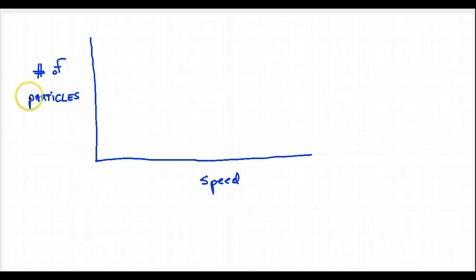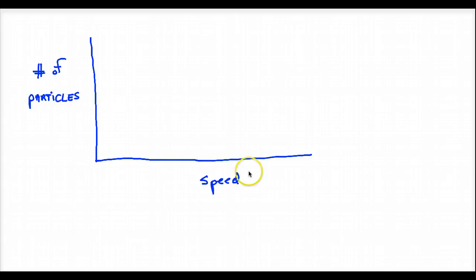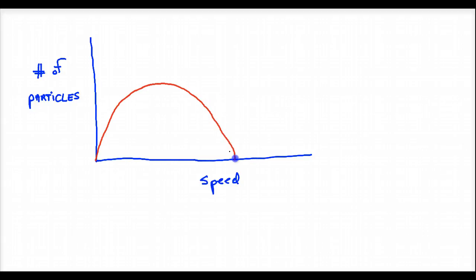On the left-hand side, the dependent variable is the number of particles, and speed is the independent variable. What we're going to have is, at a certain temperature — let's make this 30 degrees Celsius — the red equals 30 degrees Celsius, and this is the range of speeds.